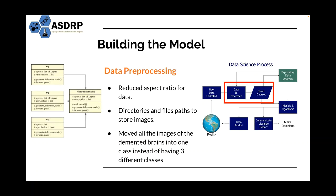Moving on to the next step: data preprocessing, which is essentially data cleaning and making the data ready to use for the model. Once we got familiar with our dataset, we had to clean the data to make it useful for training. One major preprocessing step was to recategorize the images so that we only had two classes rather than four — we moved all images of demented brains into one class for a simple classification between demented and non-demented. Other steps included resizing the images, reducing the aspect ratio, and creating directories and file paths so that our model could access the data.